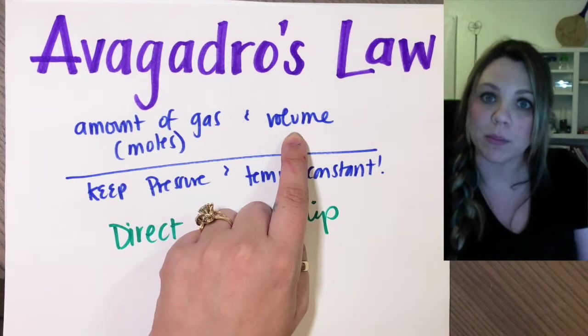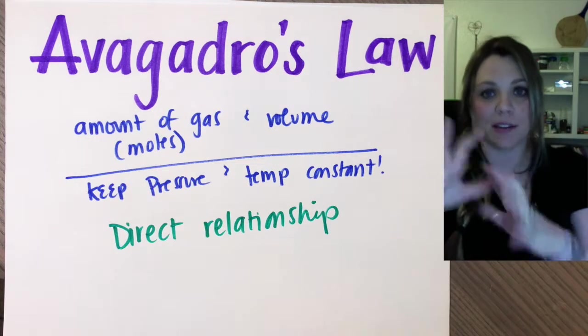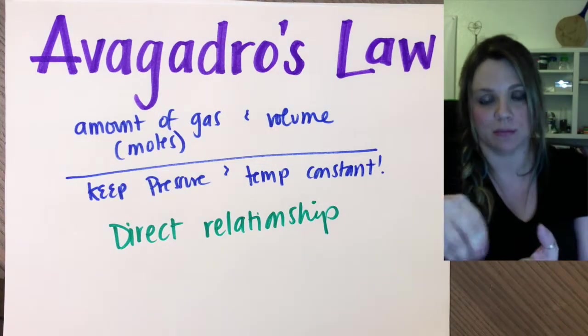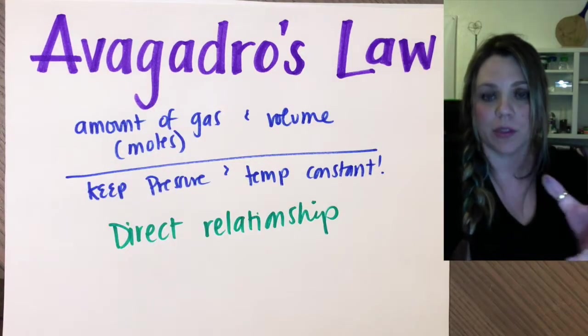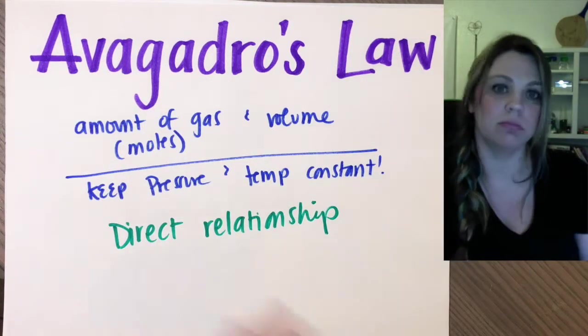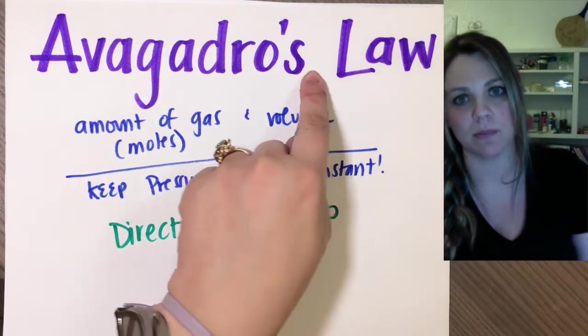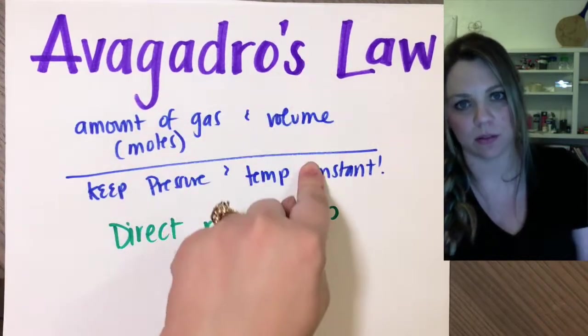If you pop a hole in the balloon, the less air that's actually in that balloon, the less moles of gas that are actually in that balloon, the smaller the balloon gets. So if one goes up, the other goes up. If one goes down, the other goes down.